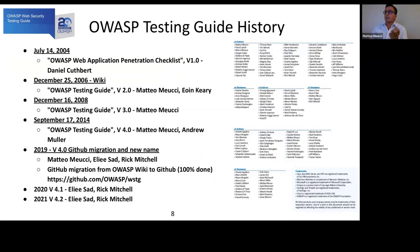Here is the Testing Guide history. We started in 2004 thanks to Daniel Kappler with the first web application penetration testing checklist, and then from December 2006 we started a new guide with Ian Carey — that was the OWASP Testing Guide version 2, the first big methodology worldwide. You can also see the growing number of authors and reviewers working in this field.